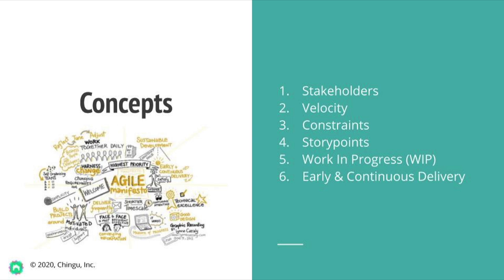Story points are a technique used to estimate the relative difficulty of a given task. One of the most popular ways of estimating story points is for team members to discuss each task and agree on a Fibonacci number that represents the complexity of that task. Work in progress, also known as WIP, is the amount of work currently in progress as measured by the sum of the story points for each active task in the plan.